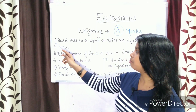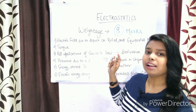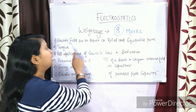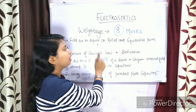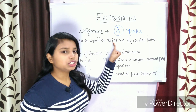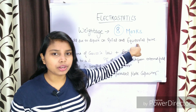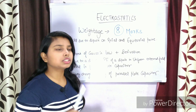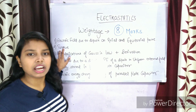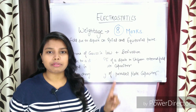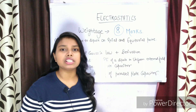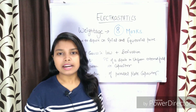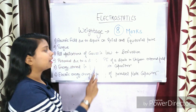The first important derivation is electric field due to a dipole on the axial point as well as the equatorial point. This is a very important derivation. Along with that, the second derivation is that the torque on a dipole in a uniform electric field — you have to derive the expression for torque.